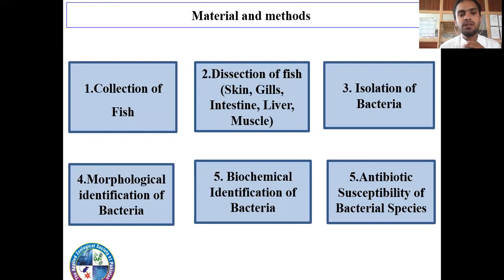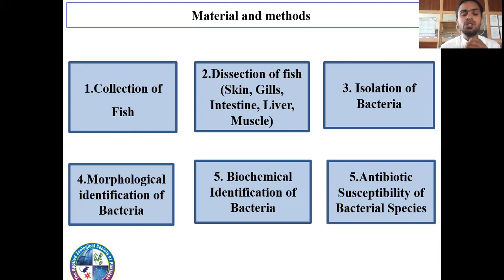Now, coming toward the materials and methods. First of all, ethical approval was obtained from the ethical committee of CUST, and then samples of fish were collected. After collection, digestion of fish and isolation of different parts like scales, gills, intestine, and liver were obtained. After that, isolation of bacteria was performed. After isolation, morphological identification of bacteria was done, and for further identification, biochemical identification was conducted. At last, antibiotic sensitivity of bacterial species was determined.